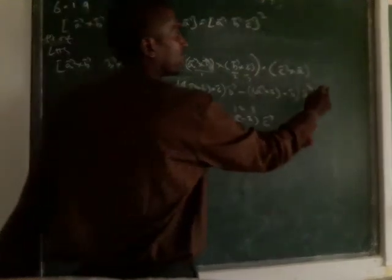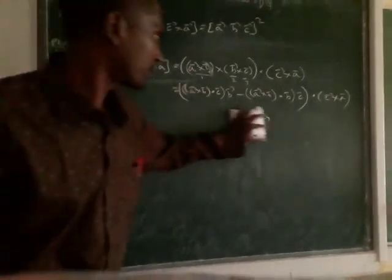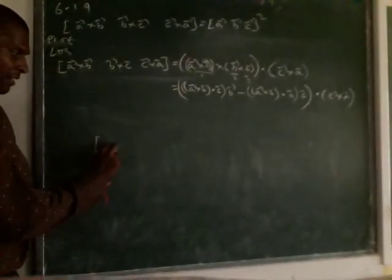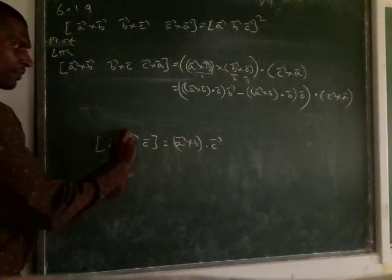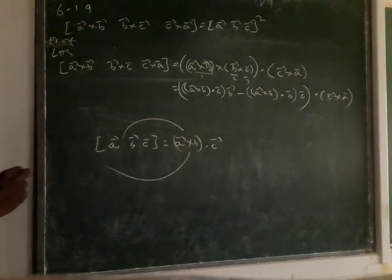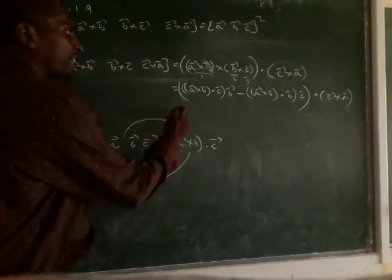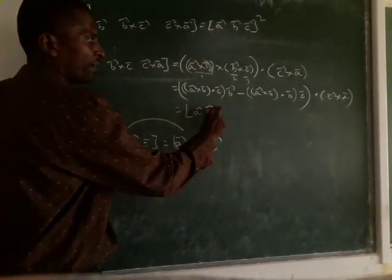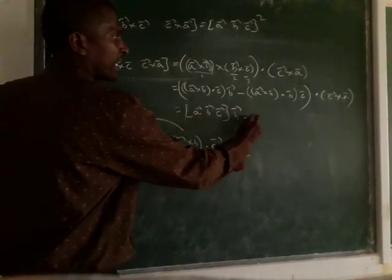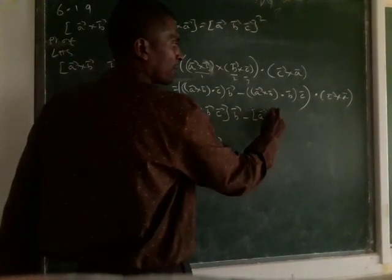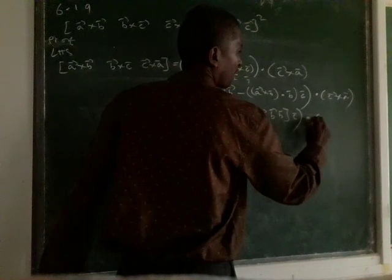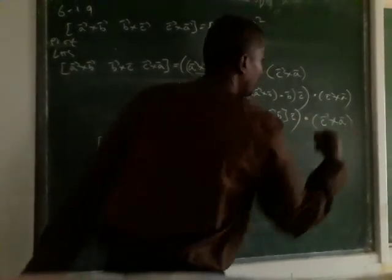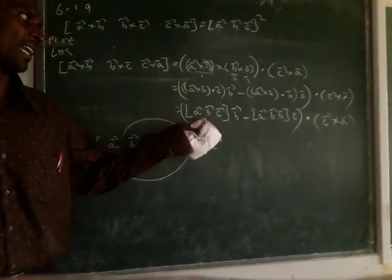Then at last the third term: C vector plus A vector. Now, only explain the box product: A vector, B vector, C vector. Here we can write A cross B dot C. We can come back again on the box product. So instead of A cross B dot C vector, we can write as A vector, B vector, C vector — box notation — minus A vector, B vector, B vector into C vector. Now write the last third term: C vector plus A vector.